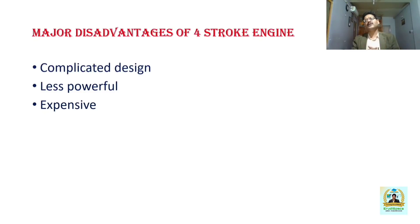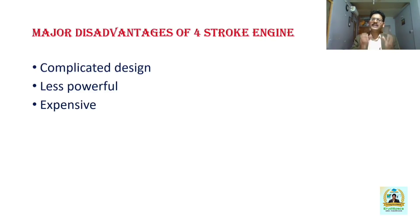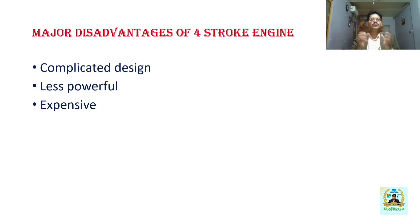In a four-stroke engine, you get one power stroke in four strokes, or two revolutions of the crankshaft. Whereas in a two-stroke engine, you get one power stroke in two strokes, or a single revolution of the crankshaft. So the four-stroke engine is less powerful compared to the two-stroke engine. Four-stroke engines are also more expensive because of the valve arrangements and valve-actuating mechanisms involved.